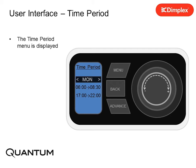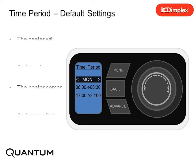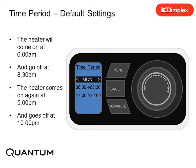The Time Period menu is displayed. The current day of the week is highlighted. Two time periods are displayed: comfort on periods, and periods when the heater is available. The heater will come on at 6am and go off at 8:30am. The heater comes on again at 5pm and will go off at 10pm.